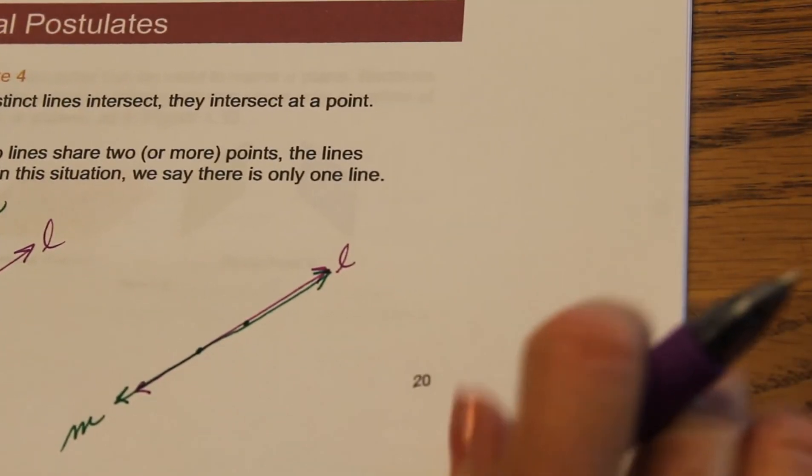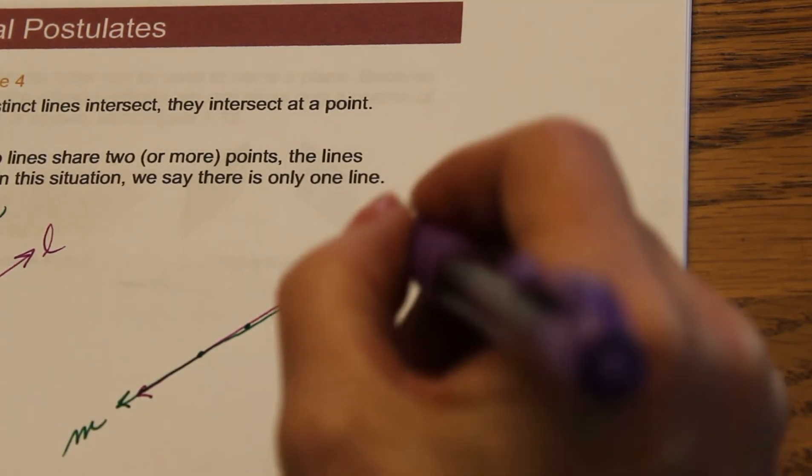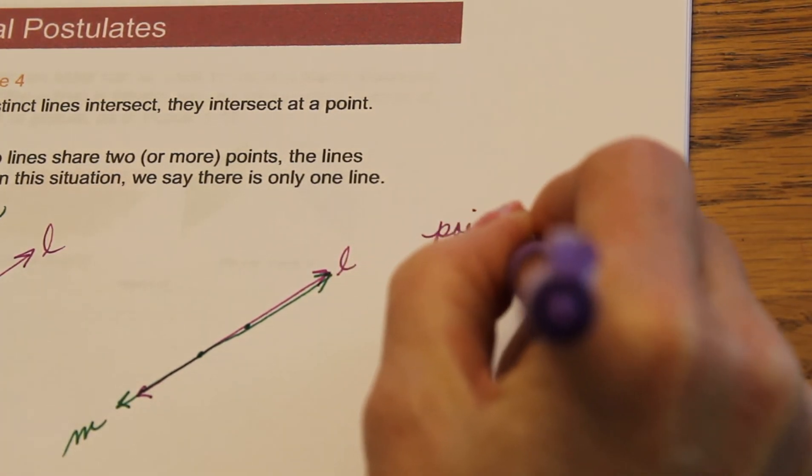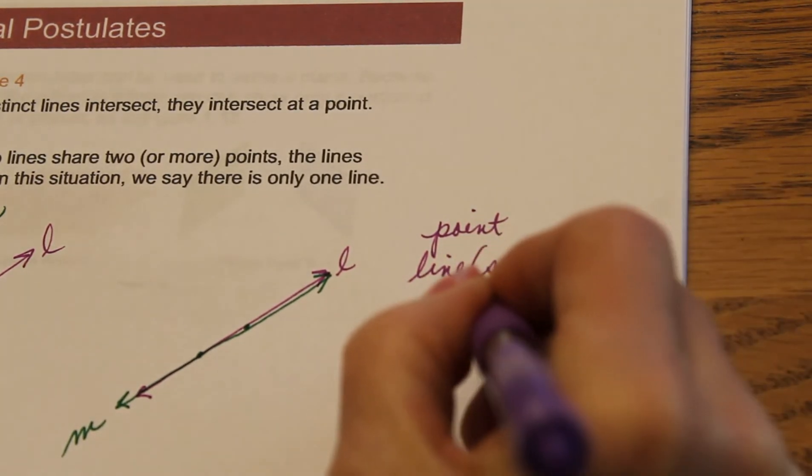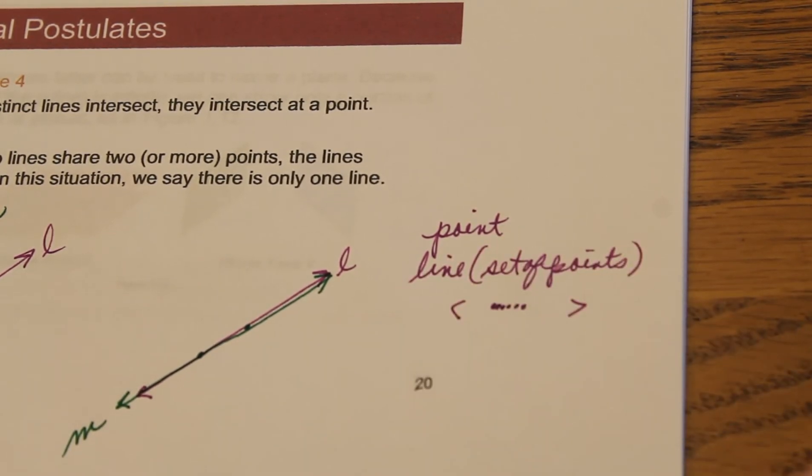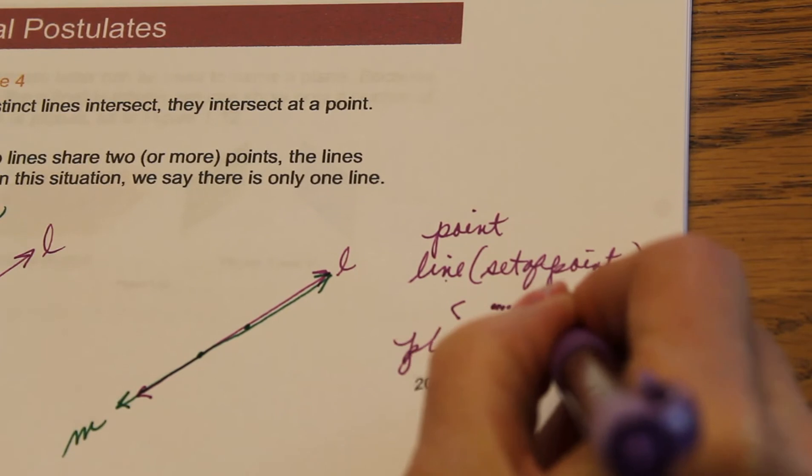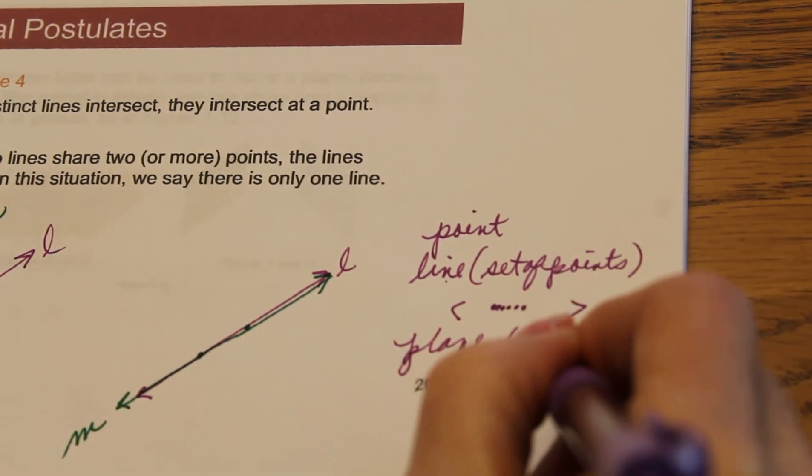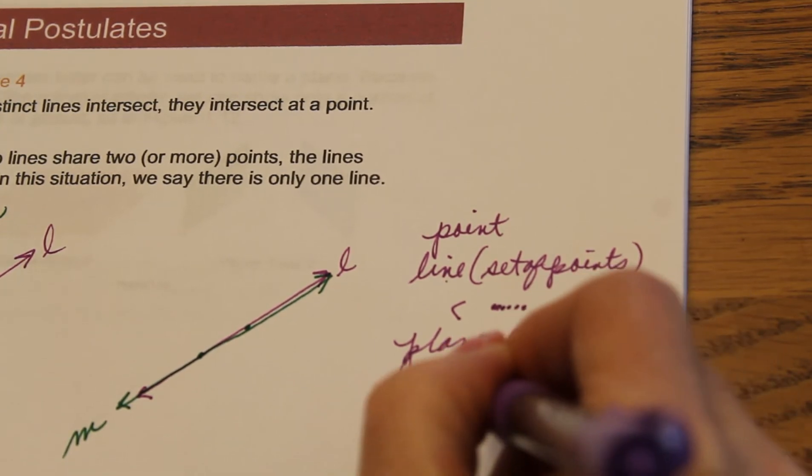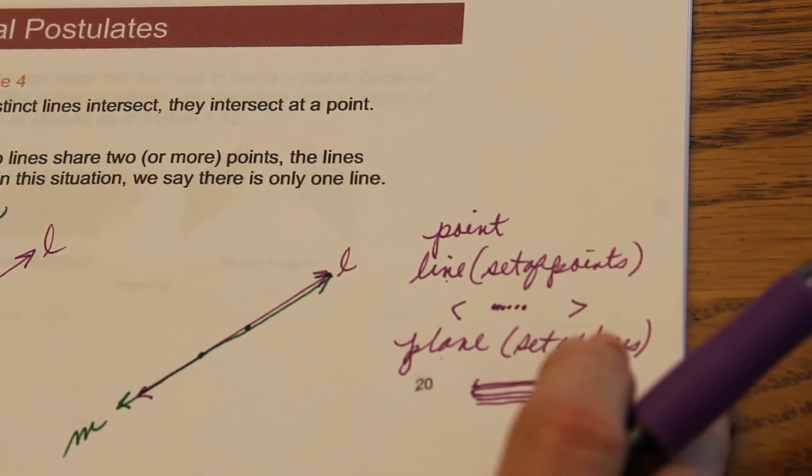So let's kind of put together our building blocks here. A point is an undefined term, it is a point in space. But what is a line? A line is a set of points. So not surprising, if lines intersect, they are going to intersect at a point. We'll get into this later in this section. But what is a plane? A plane is a set of lines. So this line and then right next to it is another line, and right next to this line, and right next to this line. So that's going to look like a plane, a flat surface. So not surprisingly, when planes intersect, they're going to intersect at lines. We'll get to that in just a moment.